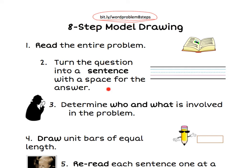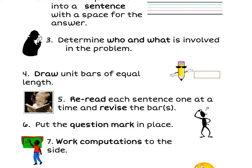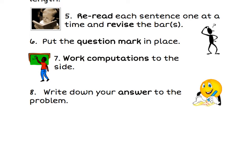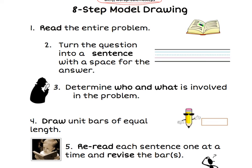Step one: read the entire problem. Step two: turn the question into a sentence with a space for the answer — like 'Joey will have blank apples.' Step three: determine who and what is involved in the problem. Step four: draw unit bars of equal length — you'll see me do that. Step five: re-read each sentence one at a time and revise the bars. Students are going to read these word problems multiple times as they solve; it's not just a one-and-done. Step six: put the question mark in the drawing. Step seven: do your work on the side, not worrying about any specific algorithm. And lastly, step eight: fill in your answer to that sentence you wrote in step two.